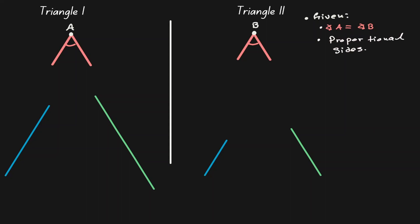Let's create two triangles given the congruent angles and the proportional sides. Let's move the blue sides to be on the left hand side of each triangle.